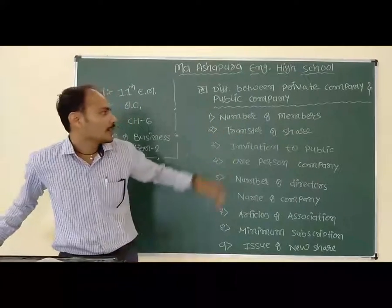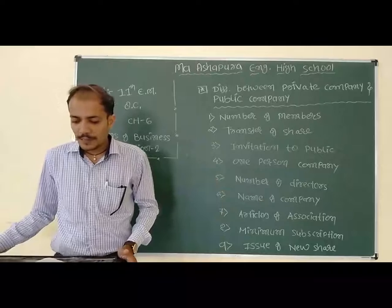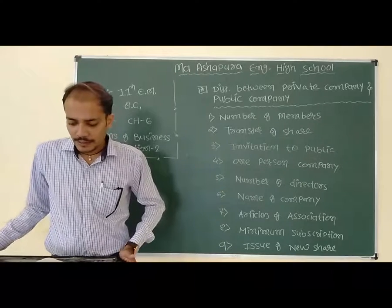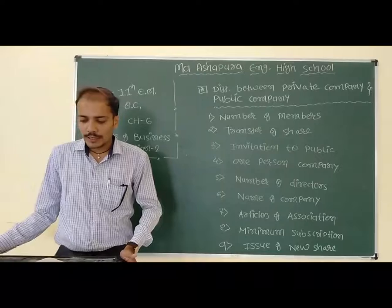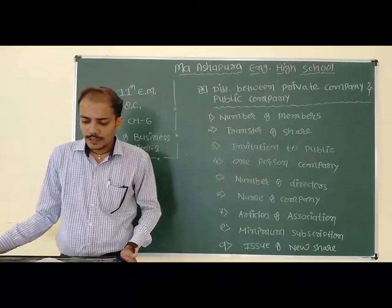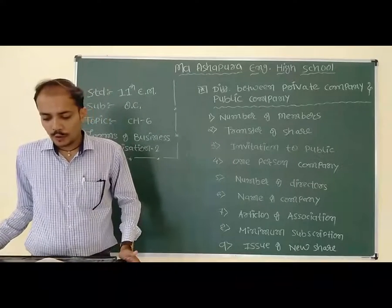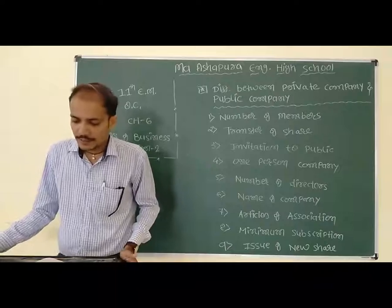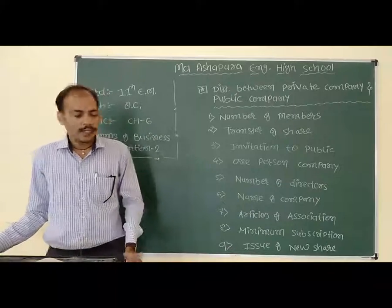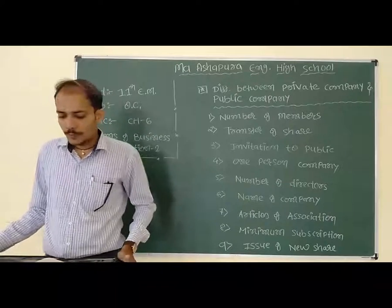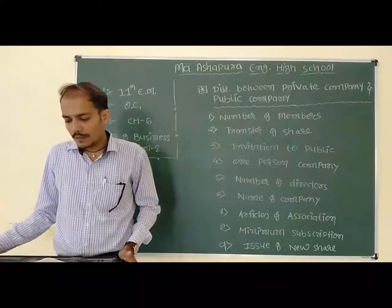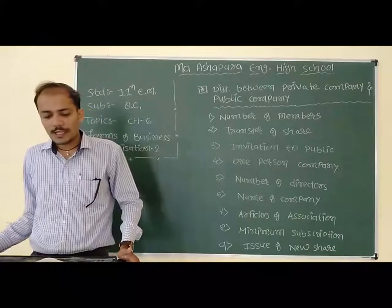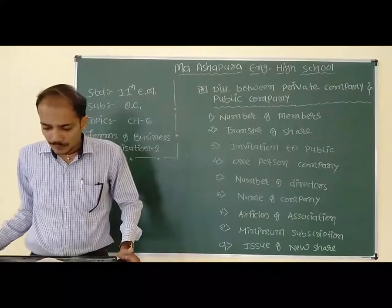First point is number of members. Private company can have minimum 2 persons as members and should not increase more than 200. This means 200 se jada below increase nahi kar sakta. Public company mein minimum member is 7 persons and no restriction on maximum members.